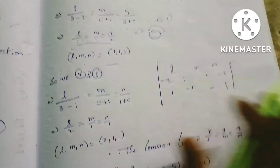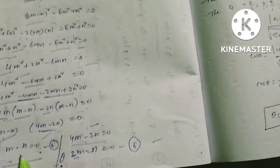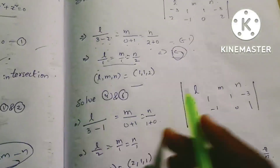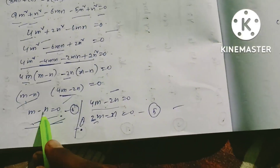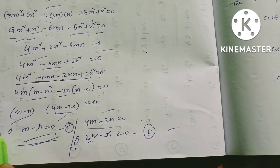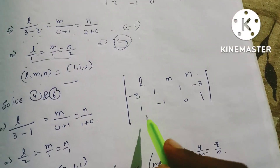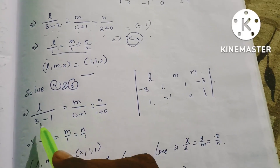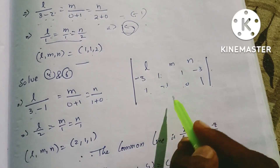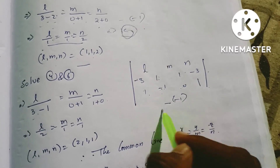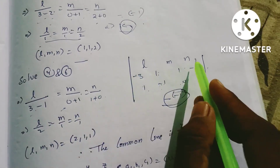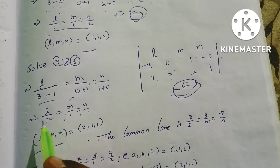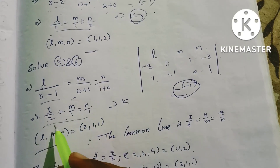Solving equations 4 and 6 simultaneously: with coefficients [-3, 1, 1] and [1, -1, 0, 1], computing cross-multiplication: L/(3·1 - 1·1) = M/(1·0 - (-1)·1) = N/(1·1 - 0·(-3)). This gives L/2 = M/1 = N/1, so the direction ratios (L, M, N) = (2, 1, 1).